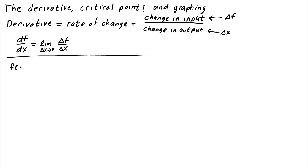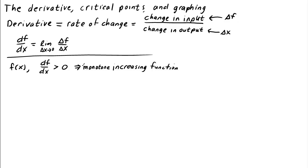If we have a function f and we are told that df/dx is positive everywhere, what do we know about the function? We know that whenever we increase the input x, the output f must also increase. We call such an f an increasing function, or even monotone increasing, to indicate it always increases. The graph of such an f might look like this.